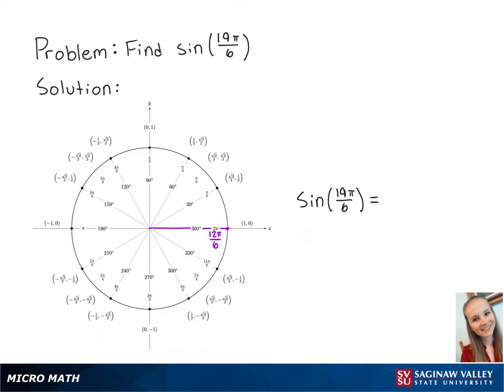To get to 19 pi over 6, we will have to travel an additional 7 pi over 6. Sine correlates to the y-coordinate on the unit circle. So sine of 19 pi over 6 is equal to negative 1 half. And this is the final answer.